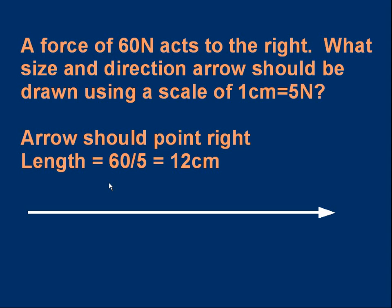And first of all, the arrow must point to the right because the force acts to the right. So we'll draw an arrow pointing right. It's 60 newtons, the magnitude of the force. And we've got a scale of 1 centimeter is 5 newtons. I hope you can see that what we've got to do is divide 60 by 5 and the arrow should be 12 centimeters long. You can check that by reversing the work if you want. It's 12 centimeters. Each centimeter is 5 newtons. So 5 times 12 is 60 newtons. It works.